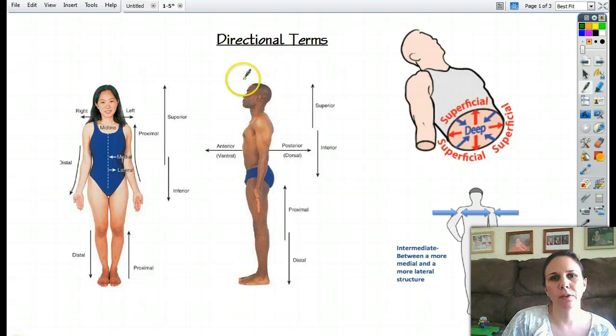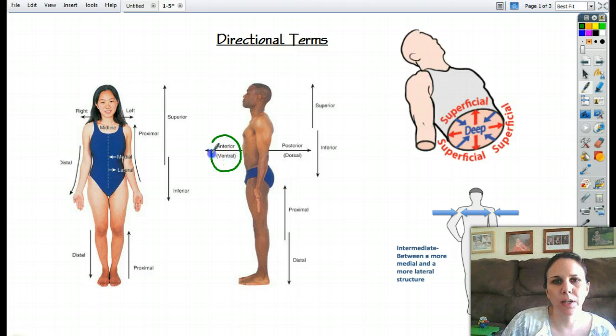Okay, now this guy right here, we notice we rotated him 90 degrees facing her. And so we can see some of the same things here. Superior towards the head. Inferior towards the bottom. Proximal towards the body. Distal away from the body. Okay, now what we have different here is right here.